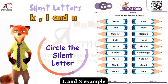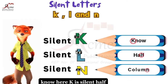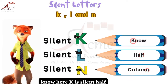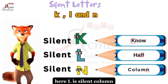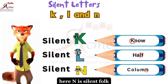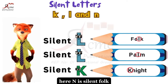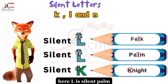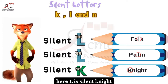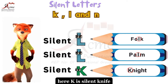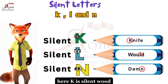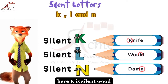Example: 'No' — here K is silent. 'Half' — here L is silent. 'Column' — here N is silent. 'Folk' — here L is silent. 'Pong' — here L is silent. 'Night' — here K is silent. 'Knife' — here K is silent. 'Wood' — here L is silent.